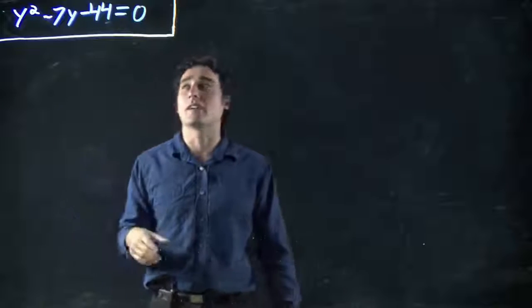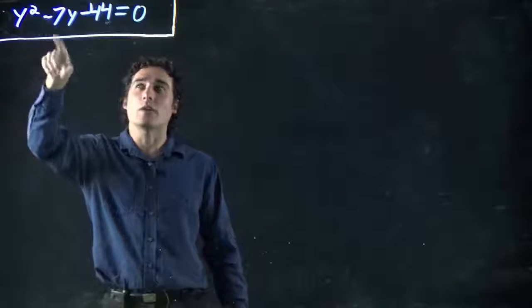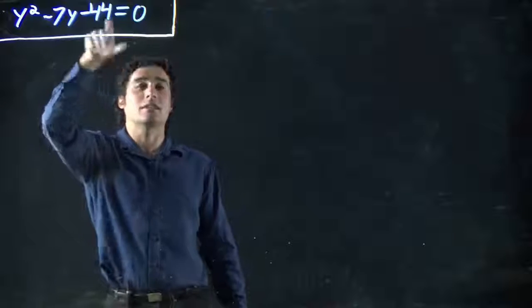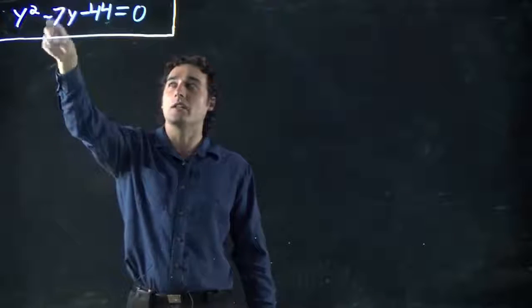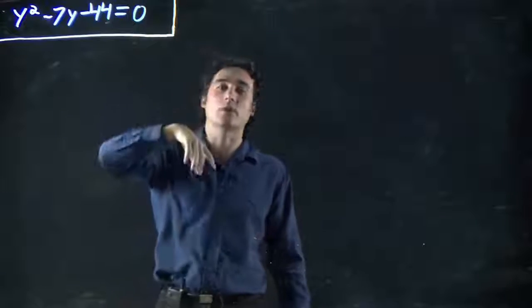Whatever variable we use doesn't matter. In this case it's ay² plus by plus c, where a is 1, b is -7, and c is -44.